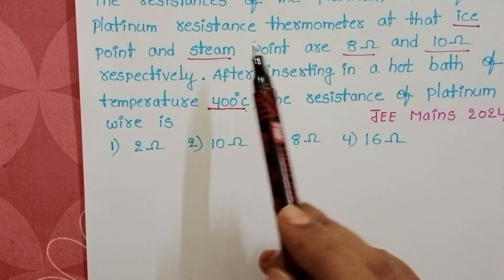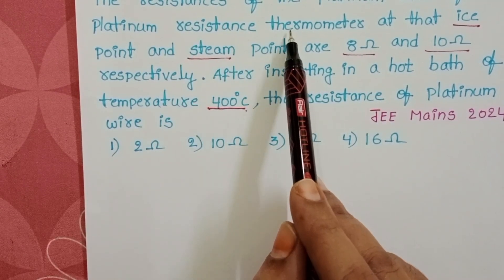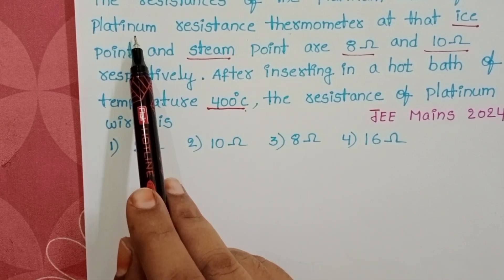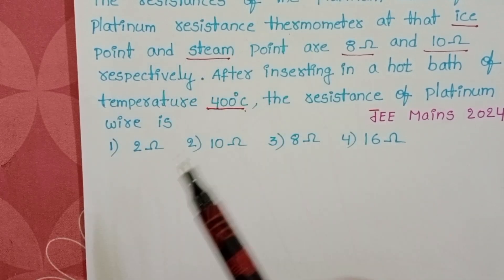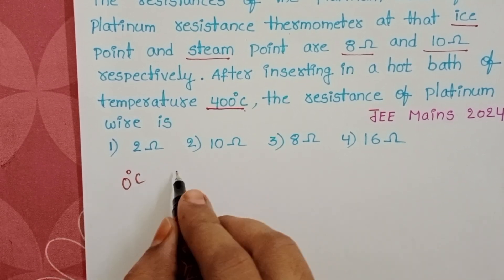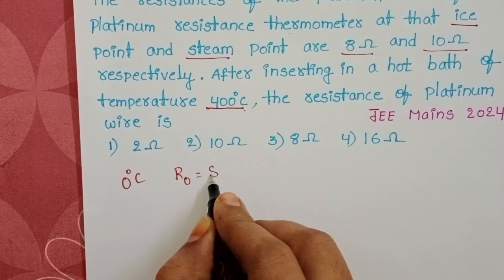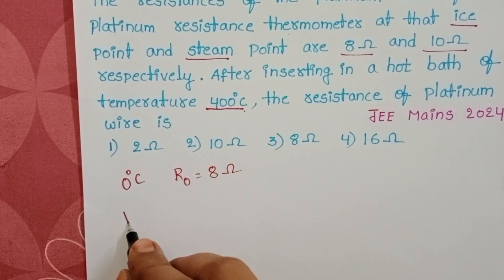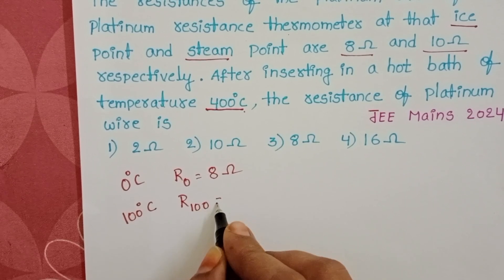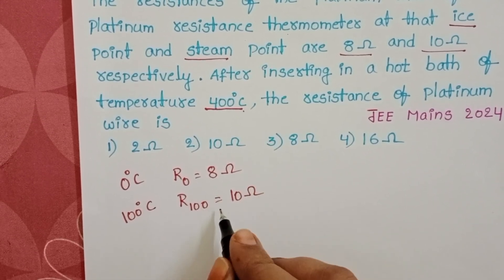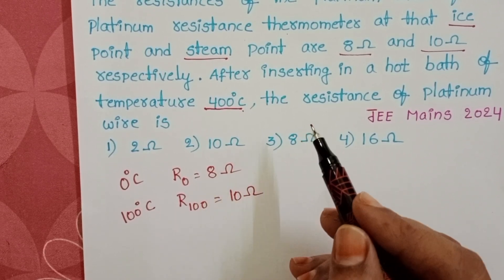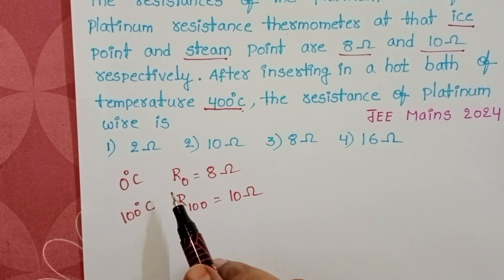In the given question, a platinum resistance thermometer is made with platinum wire. At 0 degree Celsius the resistance is 8 ohm, and when the temperature is at 100 degree Celsius the resistance is 10 ohm. This means when temperature changes, the resistance of the platinum wire also changes — it depends upon the temperature.